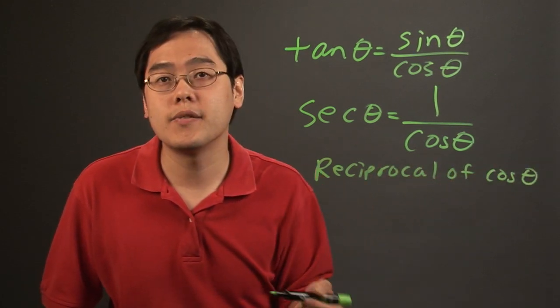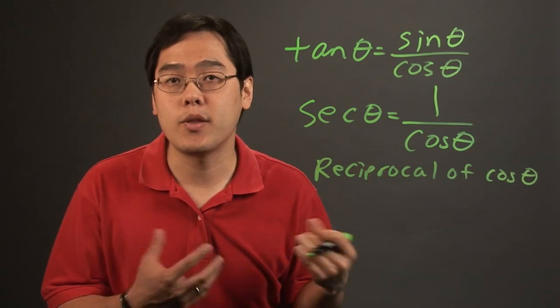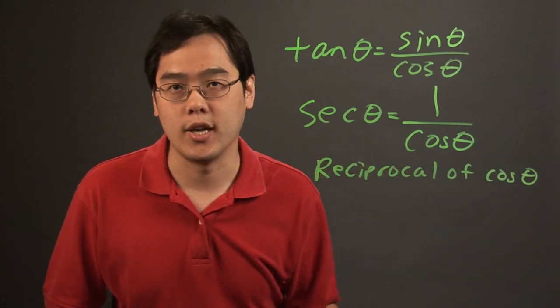So if you know the cosine of a value, just find the reciprocal of it and you'll find that angle's secant.